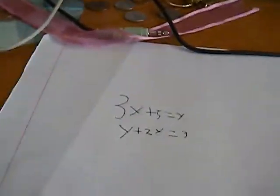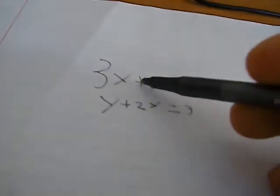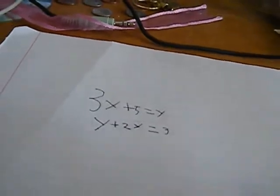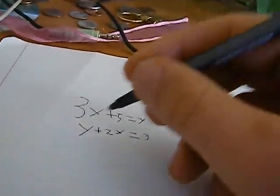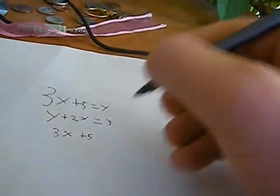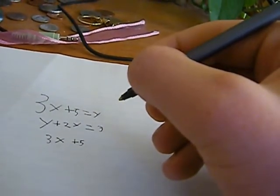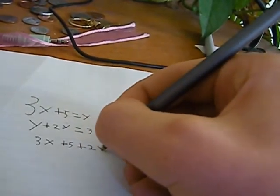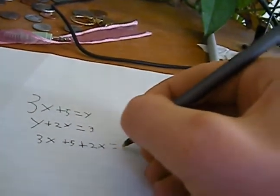The first step to solving this will be to substitute this top equation into the bottom one for the value of y. So y will now be 3x plus 5 plus 2x is equal to 3.